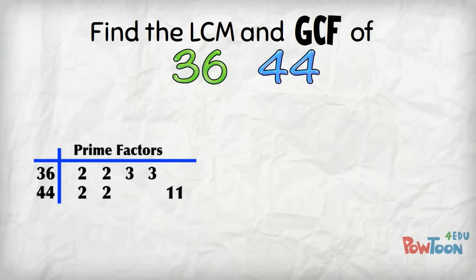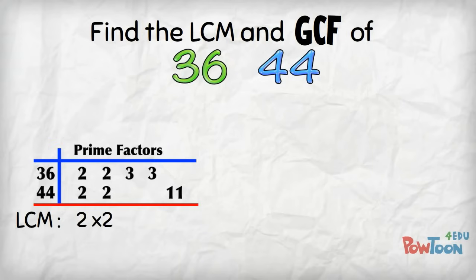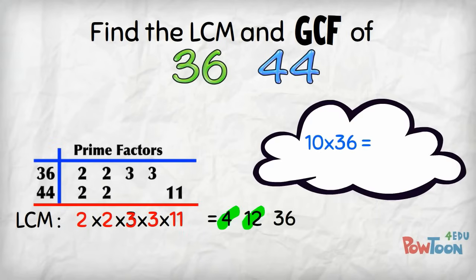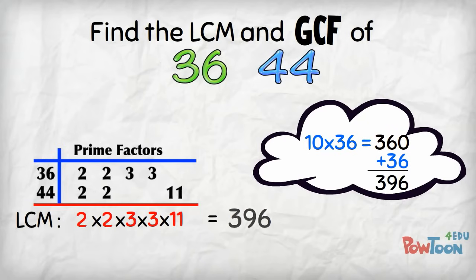Now get the factors of our LCM: 2 × 2 × 3 × 3 × 11. Work it out! 2 × 2 is 4, × 3 × 3 is 12. 10 36s are 360, and add another 36 — that makes 11 36s, which is 396. That's our LCM.